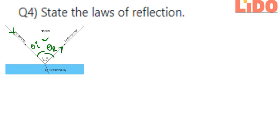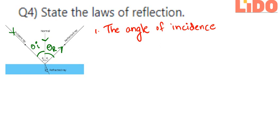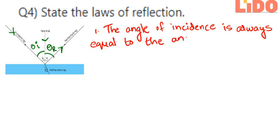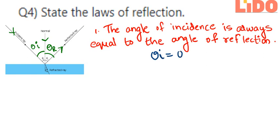Now let's get into the laws of reflection. The first law is that the angle of incidence is always equal to the angle of reflection. So the angle of incidence is always equal to the angle of reflection — it means theta i is equal to theta r.